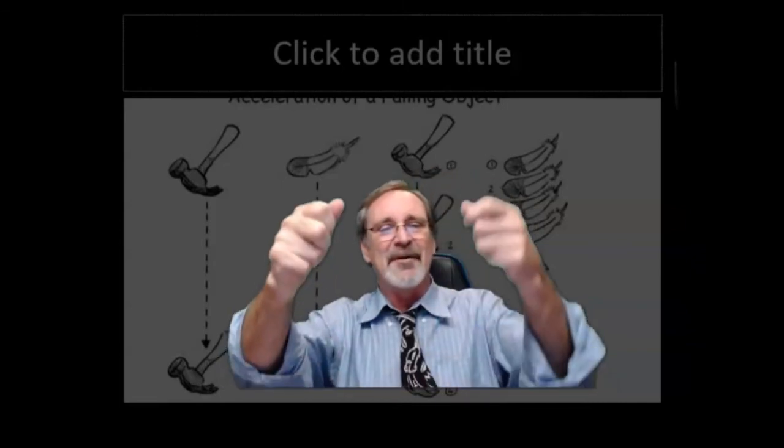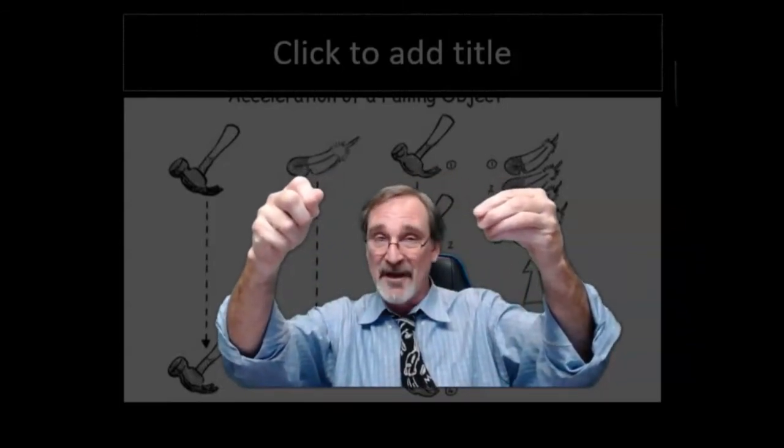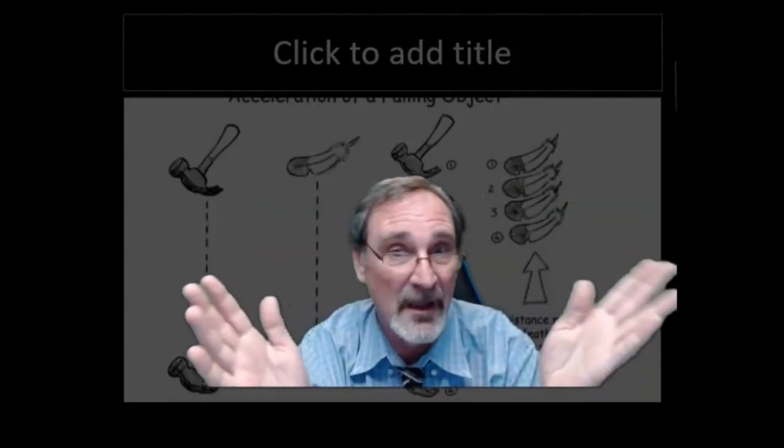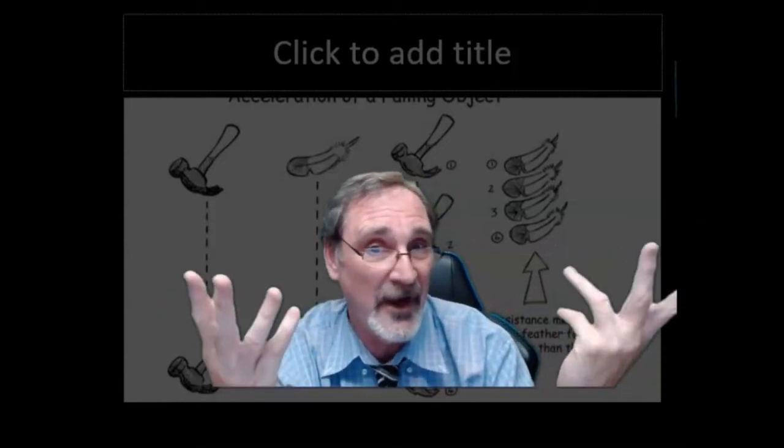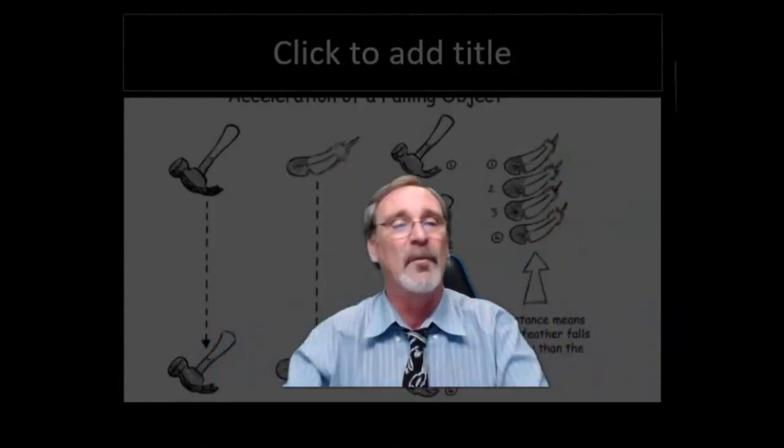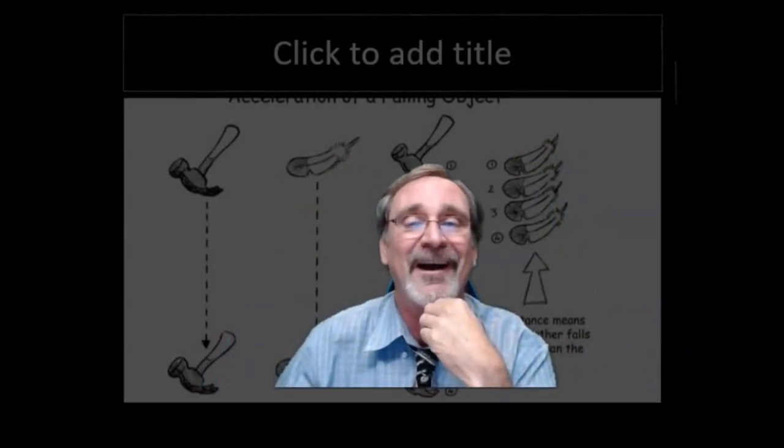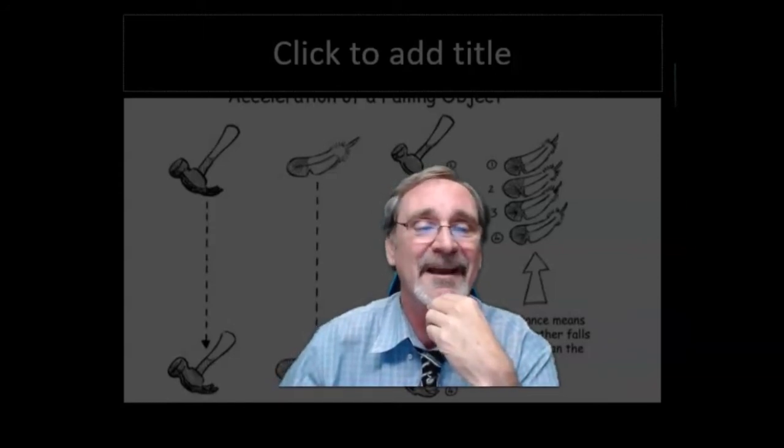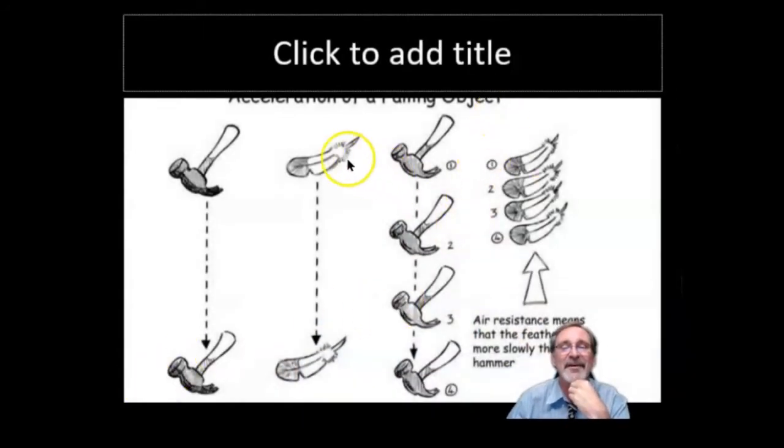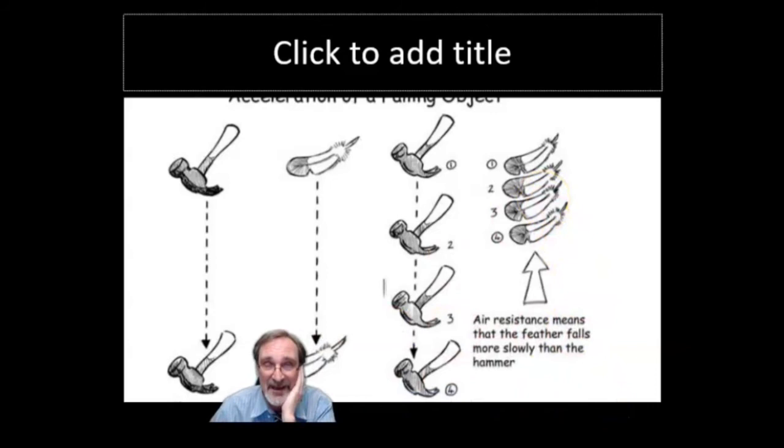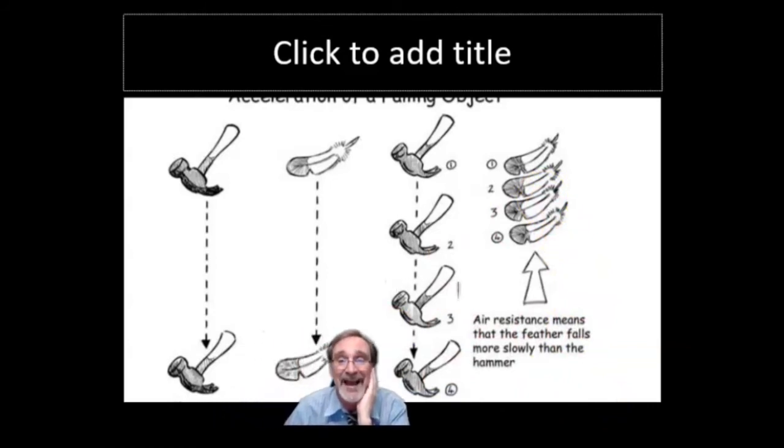What would happen if you dropped a hammer and a feather at the same time? Hammer goes faster, right? What if you did it on the moon? On the moon, there is no air. What would happen if you dropped them? Would they fall at the same speed, or would the hammer fall faster? So, the feather and the hammer. Now, this is kind of an interesting thing. Basically, the idea is air resistance is what slows the feather down. But they actually did this experiment. Take a look at this.